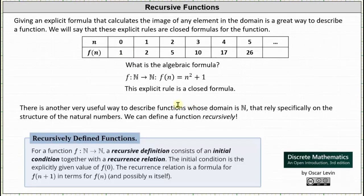So again in this case, the closed formula is f(n) = n² + 1. However, there's another useful way to describe functions whose domain is the set of natural numbers that relies specifically on the structure of the natural numbers. We can define a function recursively. For a function f which maps the set of natural numbers to the set of natural numbers, a recursive definition consists of an initial condition together with a recurrence relation.